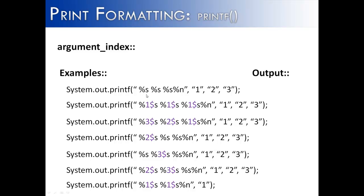In this first example here, I am not using an argument index, but rather I'm just printing the strings 1, 2, and 3 with a space in between each. And the output would look like this: 1, 2, 3.